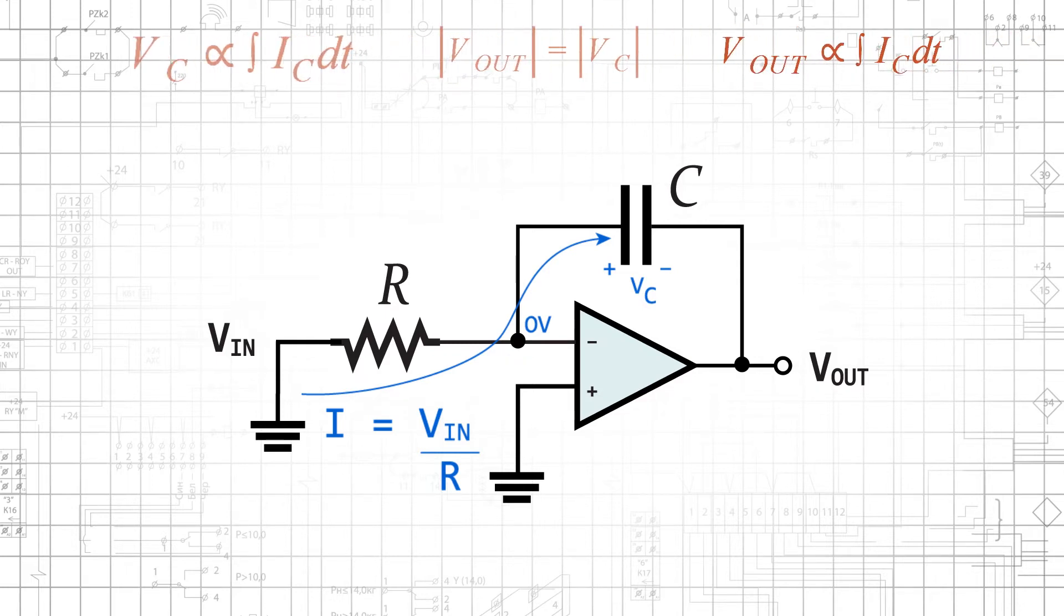Thus, the output voltage is proportional to the integral of the input current, and the input current is proportional to the input voltage. This means that the overall circuit produces an output voltage that is proportional to the integral of the input voltage.